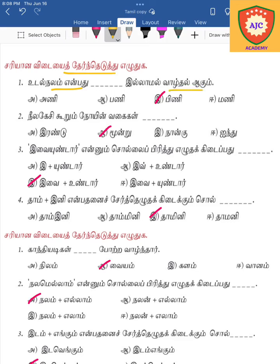First question: if there is any date, one question, one date — the option is correct. Next question: if there is any date with 3 options, the option is correct.